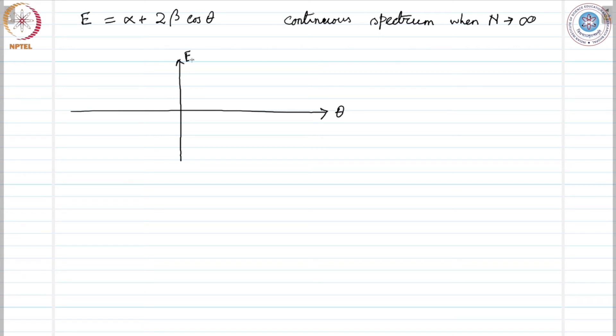The maximum value of energy here becomes α minus 2β and minimum α plus 2β.